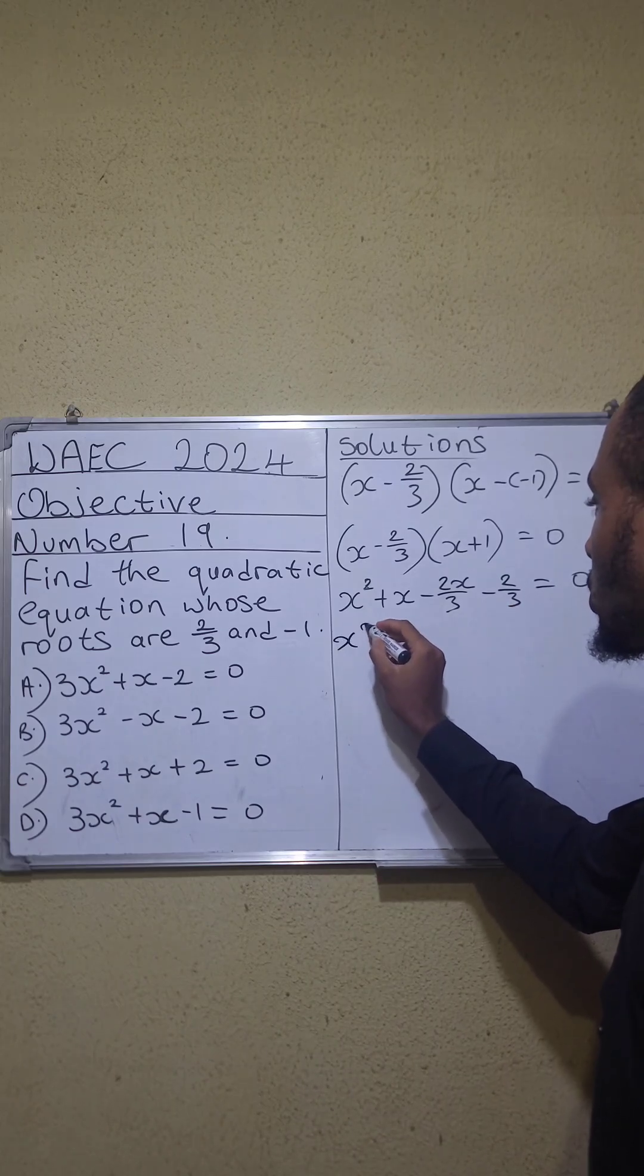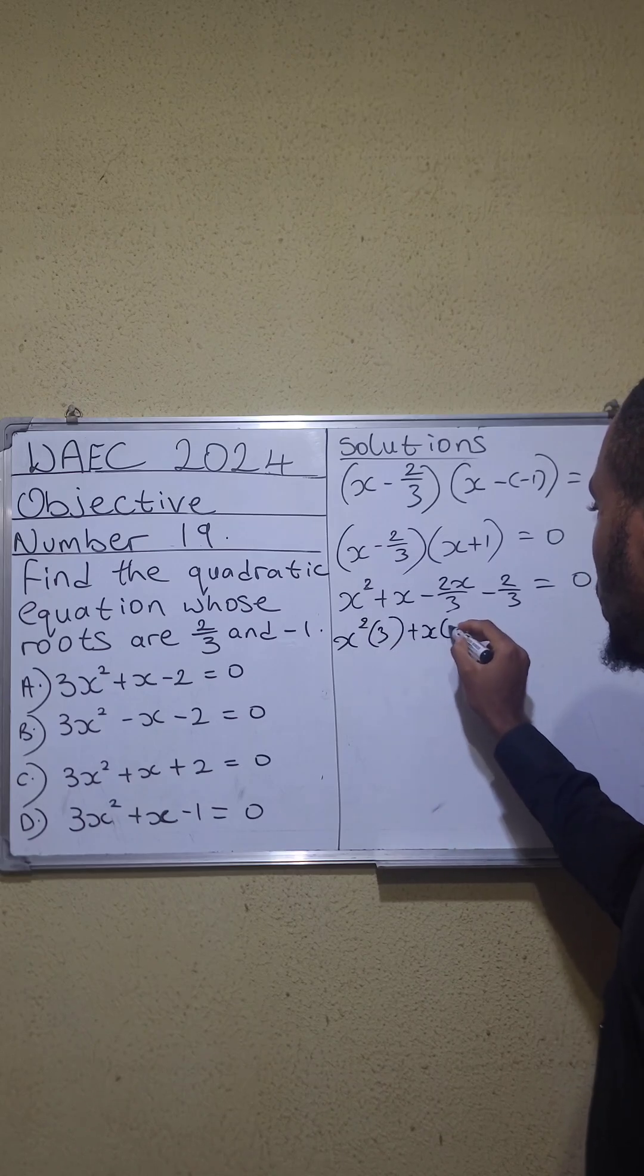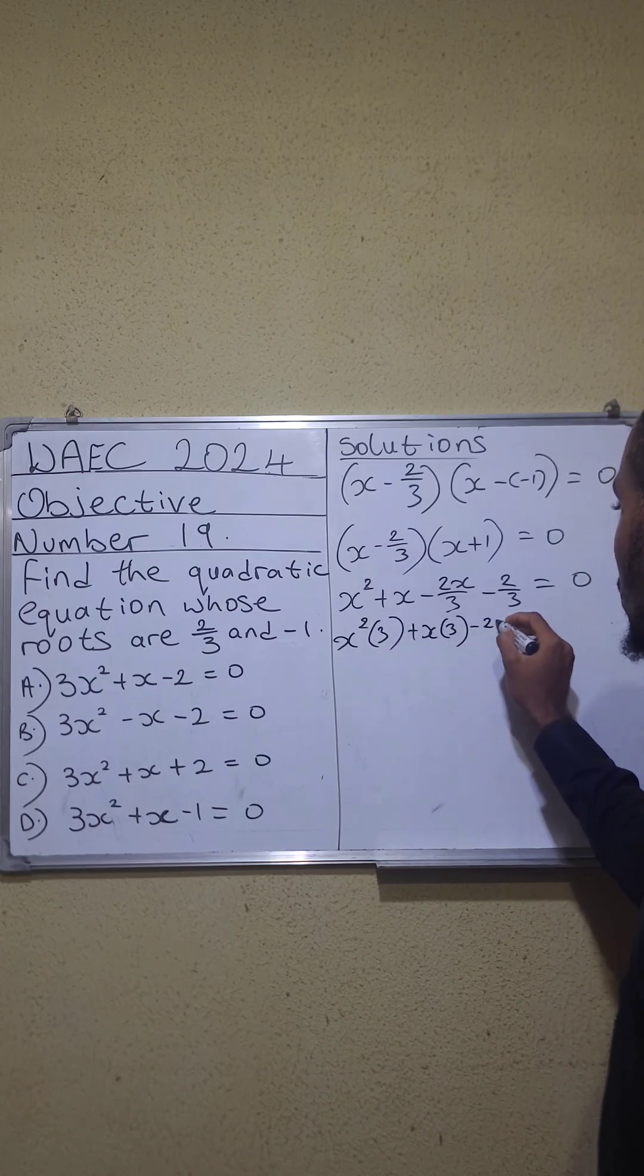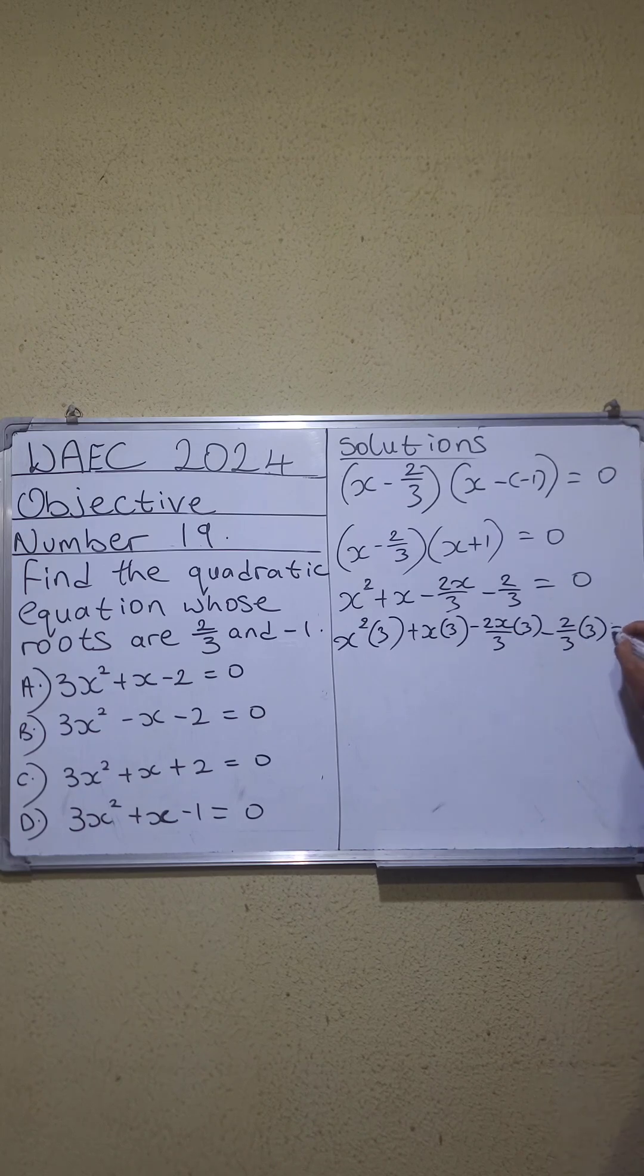This becomes x squared bracket 3 plus x bracket 3 minus 2x all over 3 bracket 3 minus 2 over 3 bracket 3 equals 0.